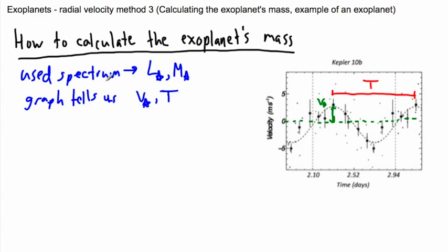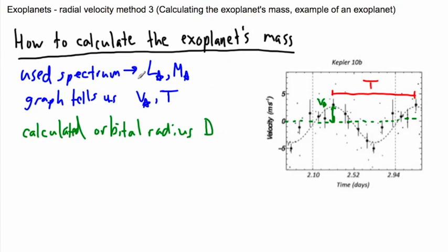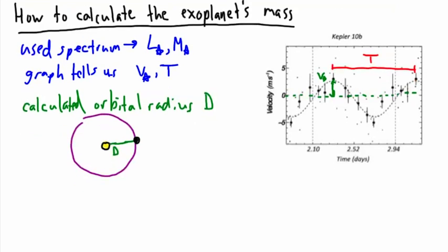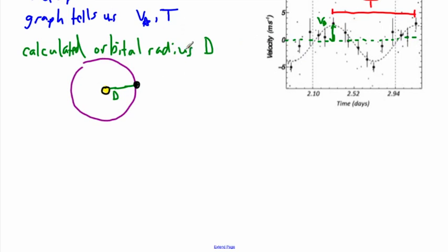In the last video, we learned how to calculate the orbital radius — we called it d instead of r. So that's something we've already done. When we looked at this star, which is wobbling back and forth, we calculated the orbital radius d, assuming it goes around in a circle. We normally call it radius r, but in this case we're calling it d.